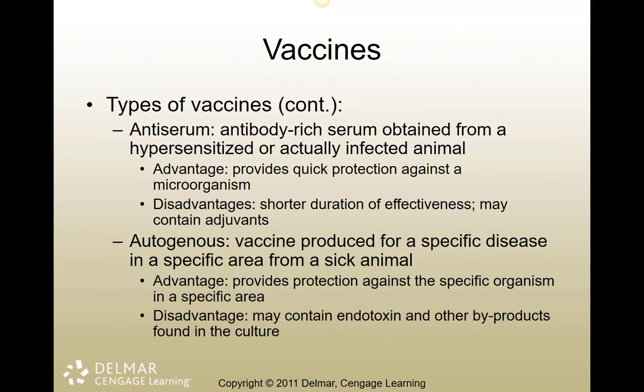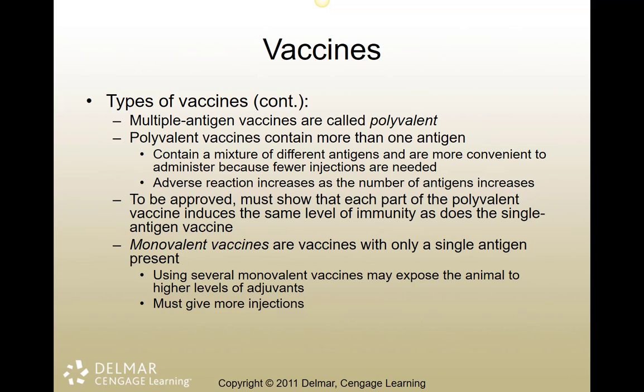Autogenous vaccines are produced from a specific disease found in the actual animal being treated. A good example is pinkeye in cattle — there are strains where the standard pinkeye vaccine doesn't work, so we take the pinkeye organism from affected cattle in the herd, make an autogenous vaccine, inject it intramuscularly, and get a much stronger immune stimulation to address that disease. Synthetic vaccines are also on the horizon, with advantages including production without natural sources, greatly reduced reactions, and potentially stable storage at room temperature.